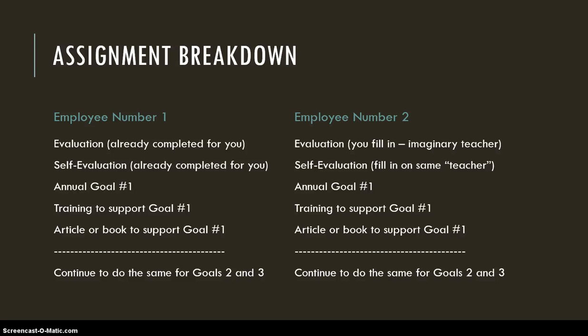Let me give you an example. Annual goal: to provide stronger support to the staff in the classroom. Training: attend a workshop on mentoring and supporting staff. You would need to search for an example online of the type of training they might attend. Reading: recommend a book or article that might help the staff member related to this topic. You need to come up with three goals for each of the employees, which would mean three training ideas and three potential readings as well.